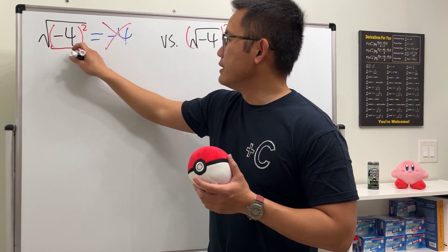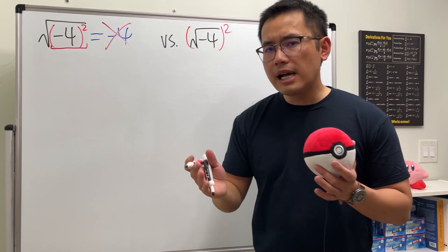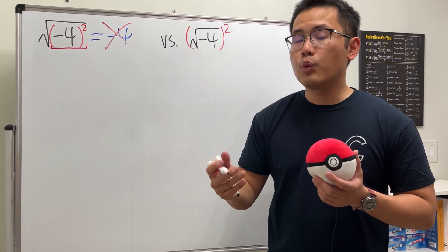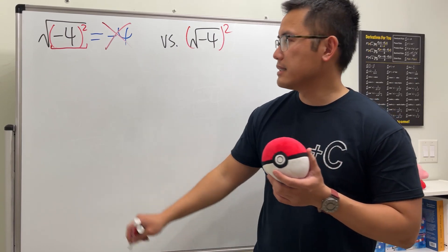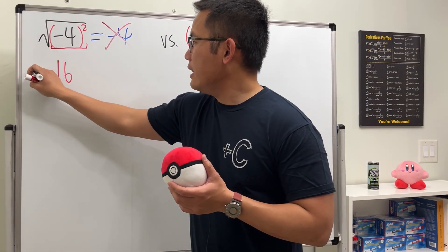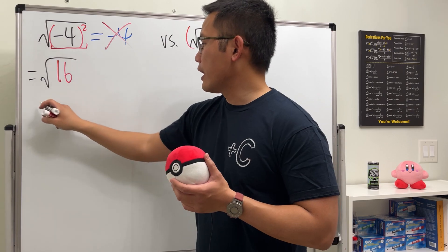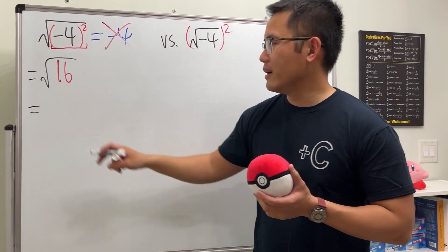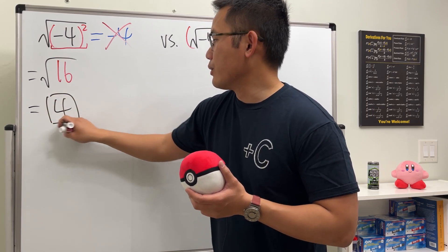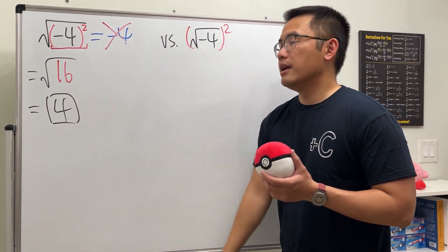And that is we have to do this inside out. So we work out negative 4 squared, which is negative 4 times negative 4, that will give us positive 16. And then we do the square root. Then square root of 16, well that's just equal to 4, and that's the only answer for that.